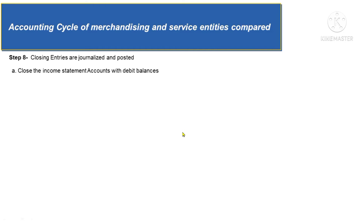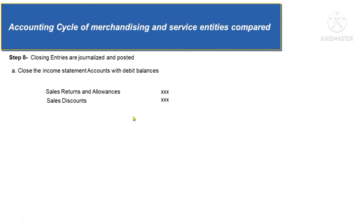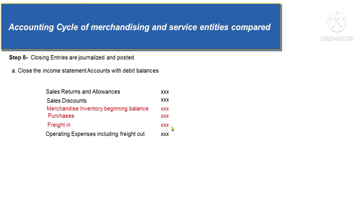For example, accounts with debit balances include sales discounts and sales returns and allowances — which are not expenses — as well as purchases, freight in, merchandise inventory beginning balances, and each of the operating expense accounts, including selling expenses like freight out and commission to agents, as well as general and administrative expenses. When these accounts are credited, the debit counterpart is the income summary account for the total of all of them.